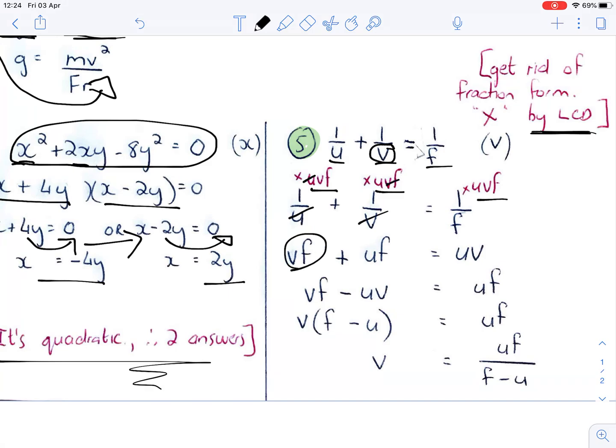When I times it by each term, the u cancels with the u and I'm left with vf, the v cancels with the v and I'm left with uf, and the f cancels with the f and I'm left with uv. Now I've lost the fraction form and I need to solve for v. V is sitting there and there, so we need it on the same side. We take this across and it becomes minus uv. I take the uf across, that should have been a minus. Then I take out a common v, I factorize and take out a common v, so I'm left with v times f minus u equals minus uf. Then my final answer, I want to solve for v, so I need to divide by the f minus u. Don't forget that minus there, and that will be my final answer.